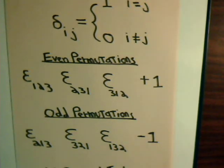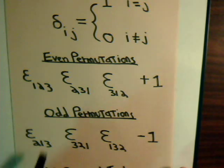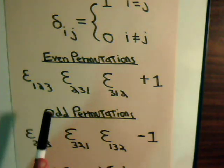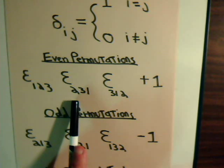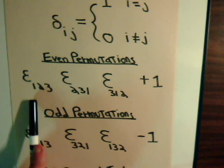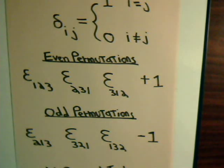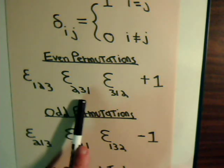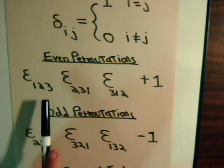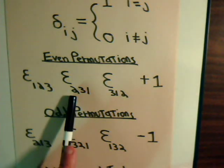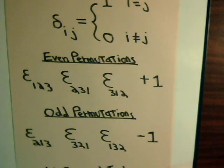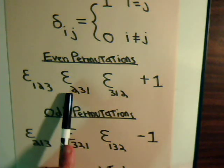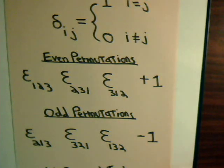The epsilon permutation symbol — we're going to be using it in the context of having three numerals, three indexes. It can have more and it can have less, but we're going to be working with three. The natural sequence is 1, 2, 3. If we shuffle these numbers around so that we have a sequence of 2, 3, 1, that could be obtained by moving the two over and then moving the three over, requiring two shuffles or two permutations. That's an even number, and whenever you have an even permutation, this has a value of plus one.